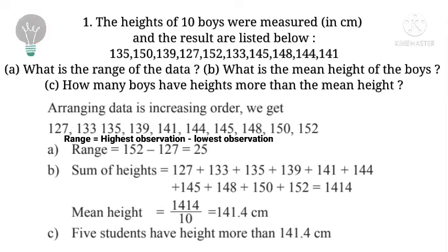Mean height equals sum of heights divided by 10, which equals 1414 divided by 10, equals 141.4 cm. Now we need to count how many students have height more than 141.4 cm. We have 144, 145, 148, 150, and 152, total 5 students.